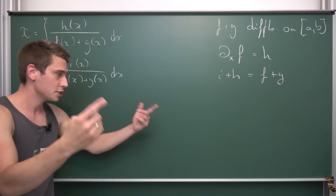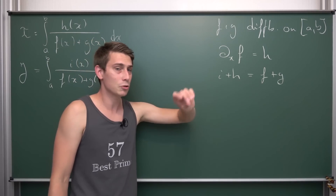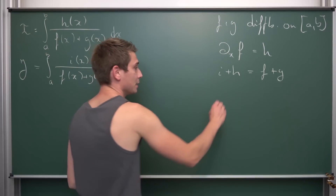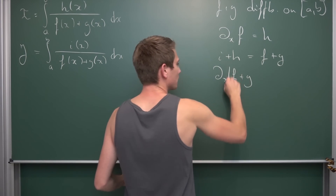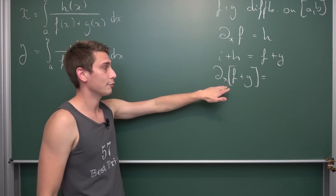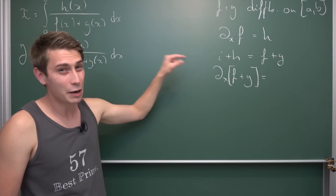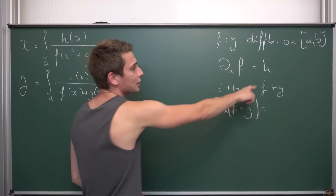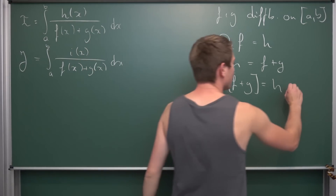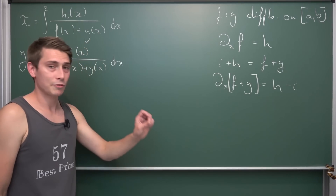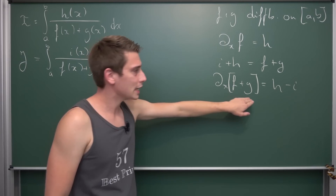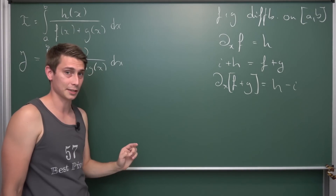We would like to take a look at I plus H and place the condition that I plus H equals F plus G. So keep in mind: if we have I plus H, we get F plus G. Also, I would like to take the differential of F plus G. By linearity of the differential operator, this is just the differential of F plus the differential of G. The differential of F gives us H by our condition, and the differential of G we want to be negative I. So d(F+G) gives us H minus I.